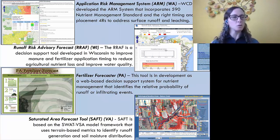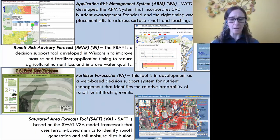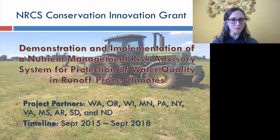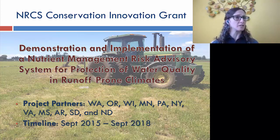All four of these tools are trying to address different aspects of how we reduce runoff and provide information to producers, landowners, and applicators so they can limit those issues. We all came together with a CID grant entitled 'Demonstration and Implementation of a Nutrient Management Risk Advisory System for Protection of Water Quality in Runoff-Prone Climates' to combine the best parts of our tools and provide a platform for national adoption.